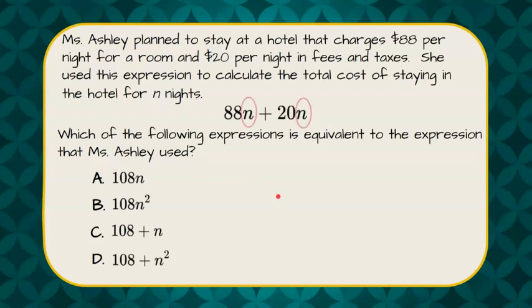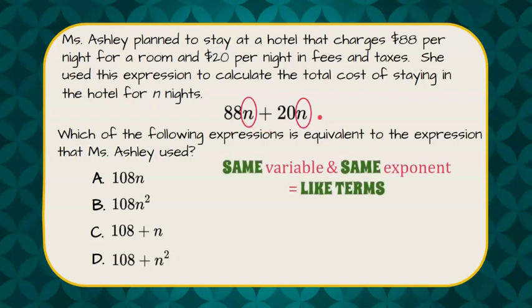First we're going to identify that these are what we call like terms. They have the same variable and the same exponent — an invisible one — making them like terms. When we have like terms, we can add the coefficients.